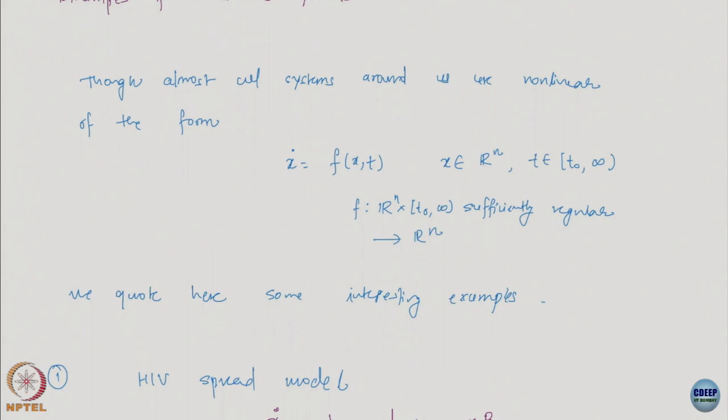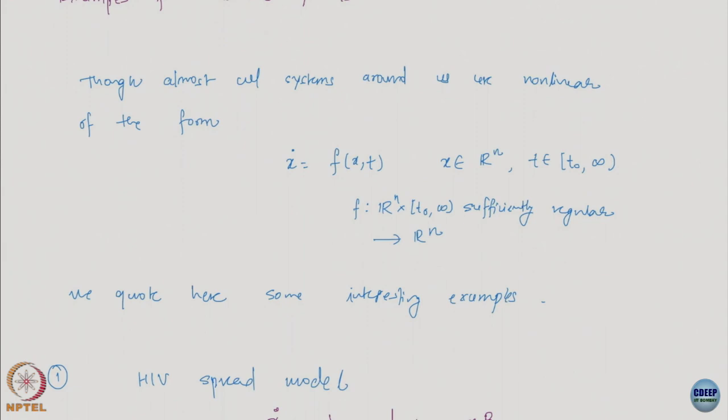This is also the mathematical representation. I hope all of you are comfortable with these kinds of notation. If not, I really encourage you to look up some of these notations. We typically say that our system is of the form x-dot = f(x, t). This is a nonlinear system — not a nonlinear control system, because there is no control in the expression. Here f is typically a map which is sufficiently regular.